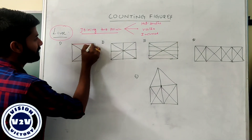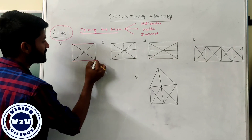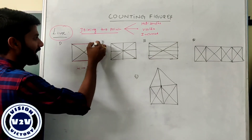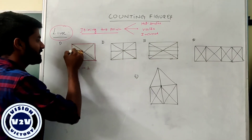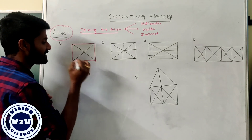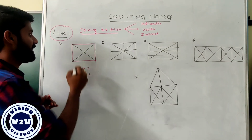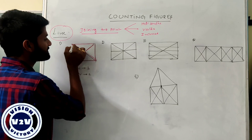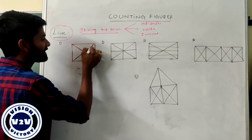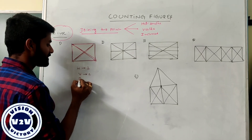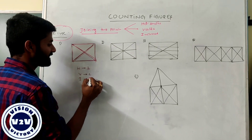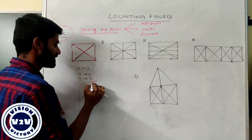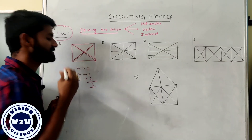For this question, we have two horizontal lines — the number of horizontal lines are two. And we have two vertical lines — the number of vertical lines are two. And we have two inclined lines: this is one inclined and this is the other inclined. The total of inclined lines are two. So the total number of lines for this figure is equal to six.